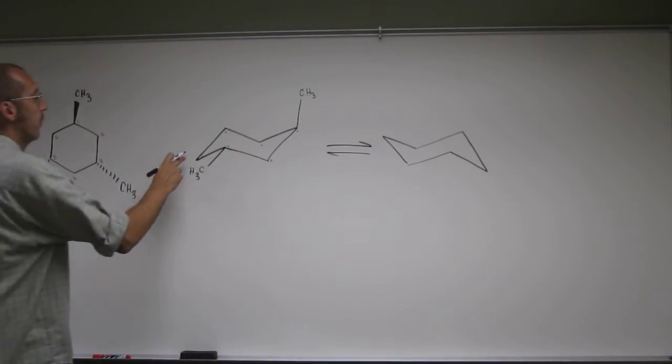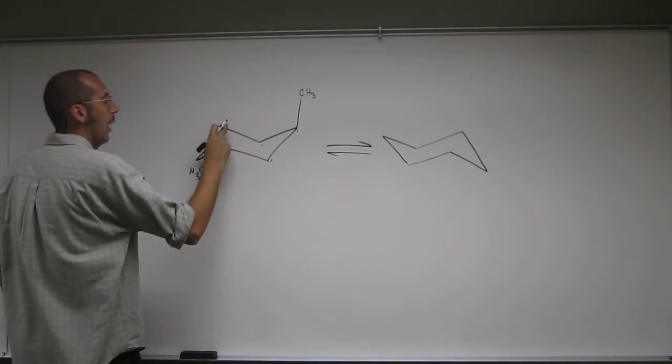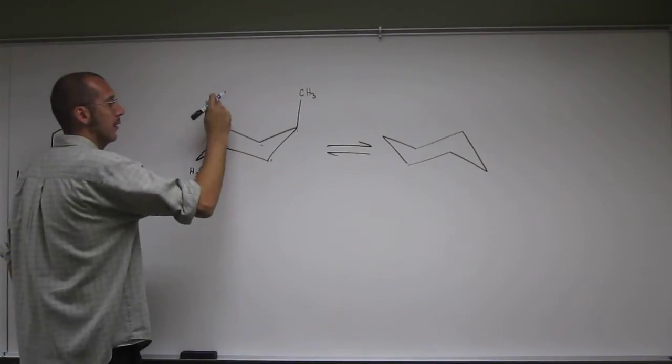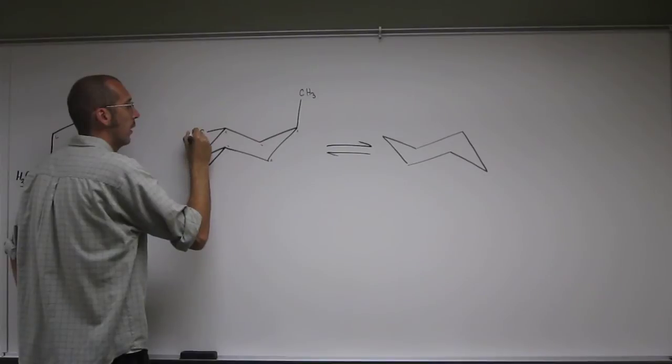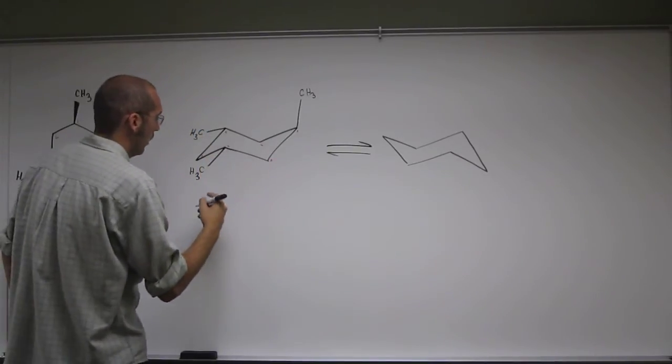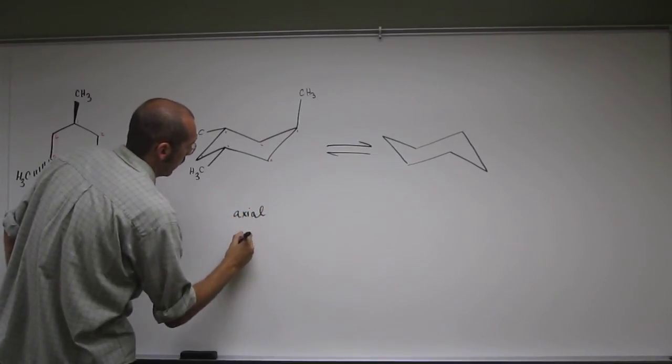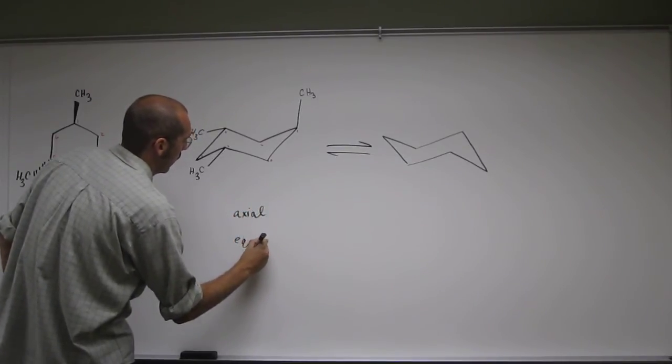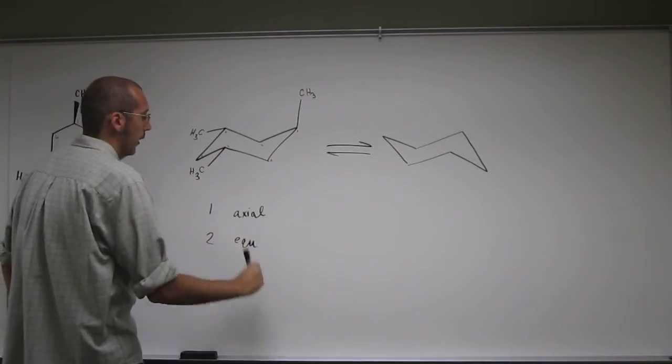And then 4, 5, so this one is also down. Up is there, axial, so this one has to be equatorial. Okay, so now we want to count the number of axial to equatorials we've got. So here we've got one axial, two equatorials.